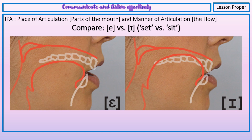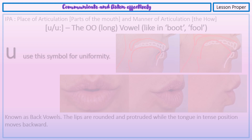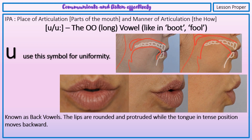Eh, ih. Ooh. This vowel sound occurs in the words through, blue, do.